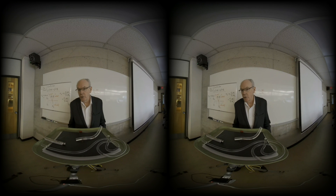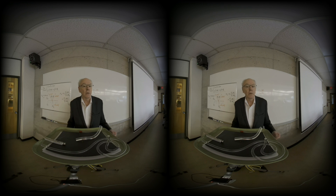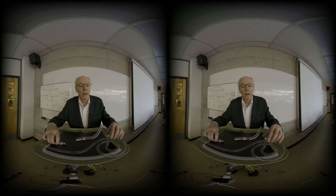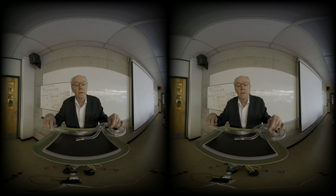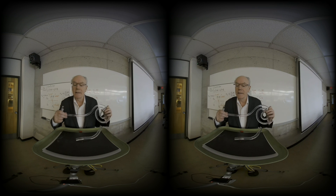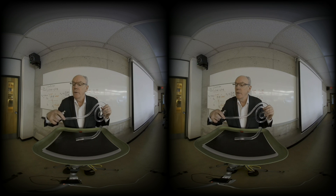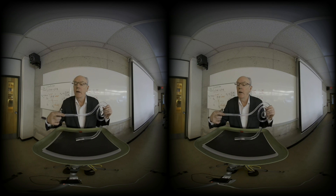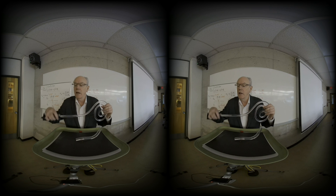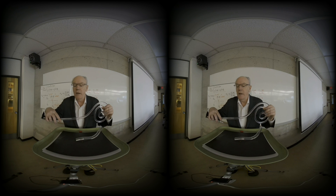The theory of total internal reflection leads to the concept of light guides. A light guide, as the term suggests, basically guides the light. So I shine light in on one side and you can see it come out on the other side.